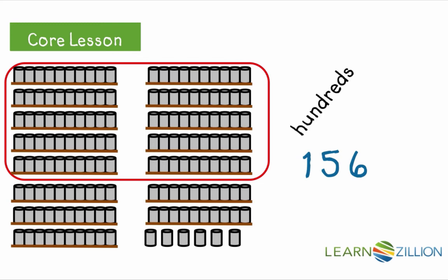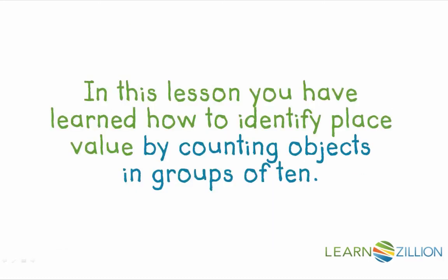Remember, each digit has its own place value. The first digit, one, is in the hundreds place. It tells us how many groups of hundreds there are in the number. In this number, there is only one group of hundreds. The next digit, five, is in the tens place. It tells us there are five groups of tens in this number. The last digit is six. It is in the ones place. It tells us that there are six ones in the number 156.